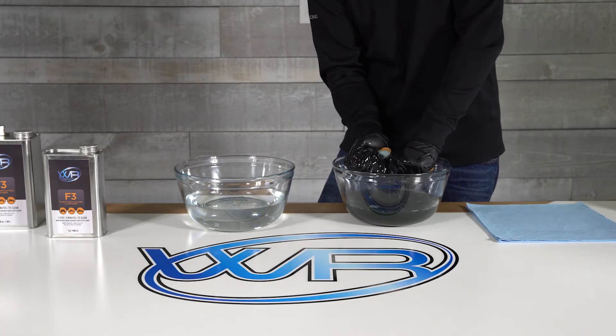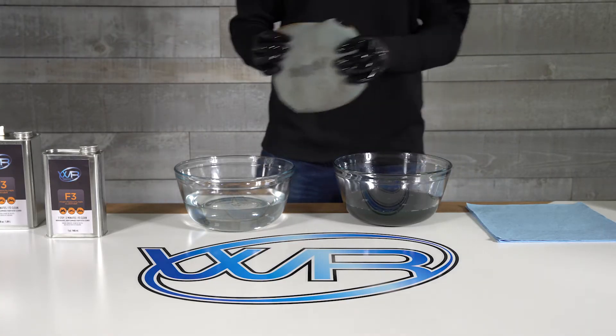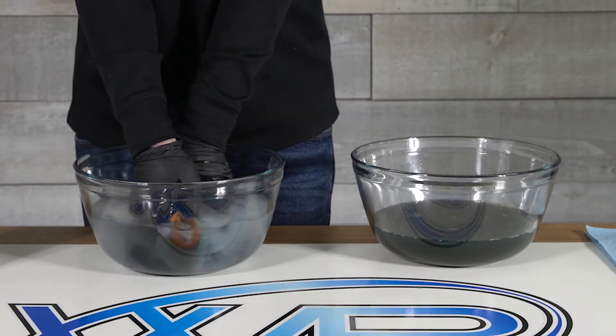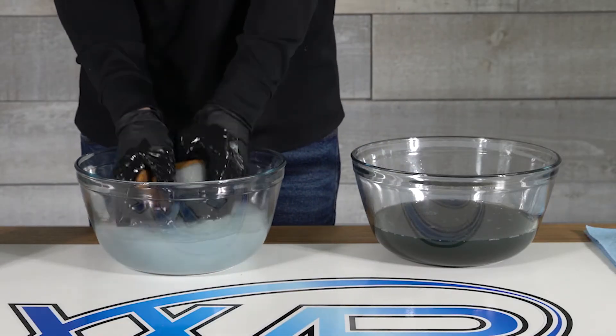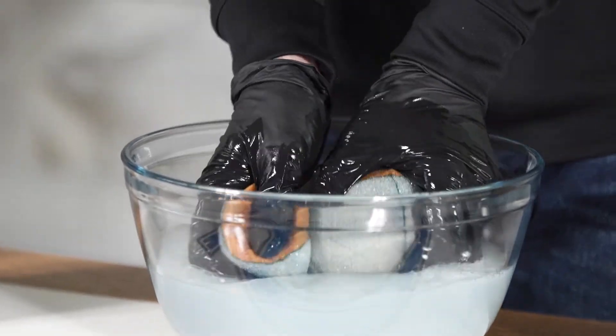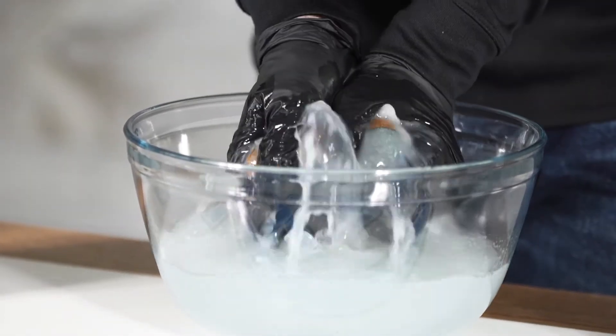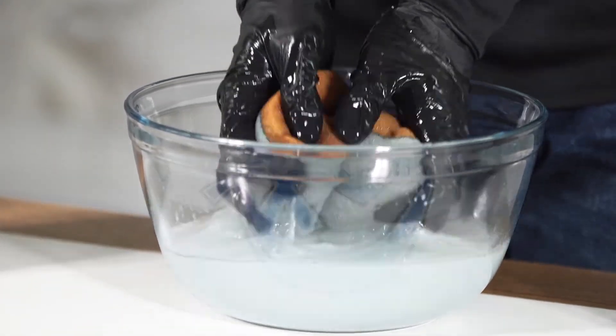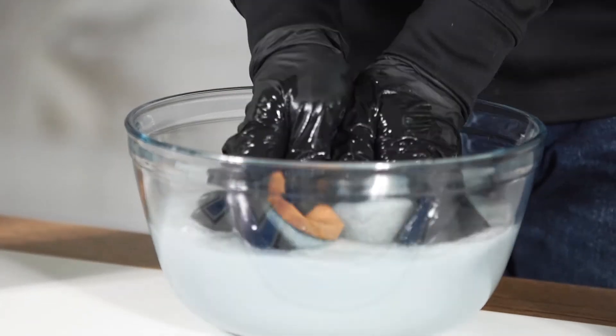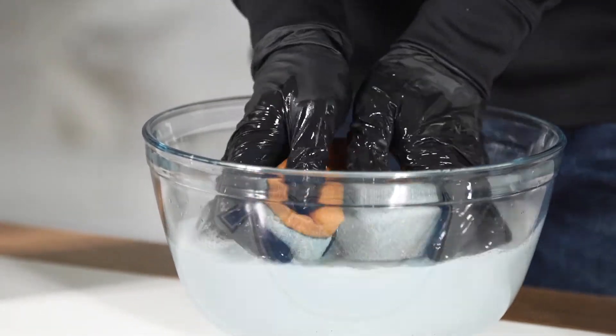After you've fully saturated and squeezed out the excess solution, you're going to want to thoroughly rinse your filter in water. Now typically you would use clean running water, but today I'm using a bowl so that you can easily see how it works. F3 has a self-activating soap when contacting water that rinses out the residual solution and any dirt that's still lingering.